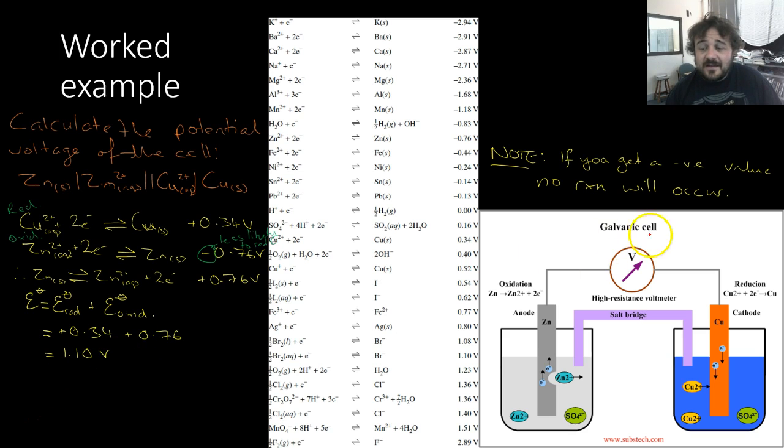Then, we just simply add it together, and it becomes plus 0.34 plus 0.76 gives you 1.10 volts. Okay? That is how much electromotive force we can get from this cell. Now, if you get a negative number, and that will happen sometimes, if you get a negative value when you do this, no spontaneous reaction will occur. As long as the number is positive, a spontaneous reaction can occur. And that's the lot. See you later.